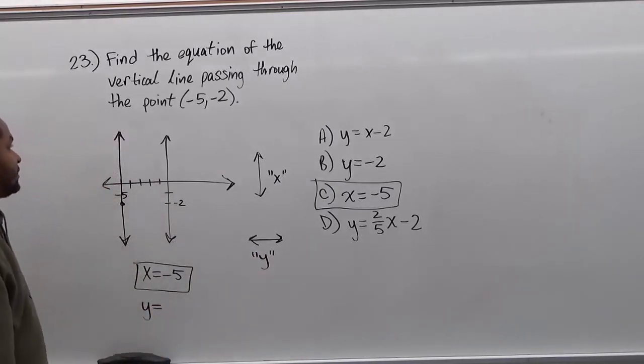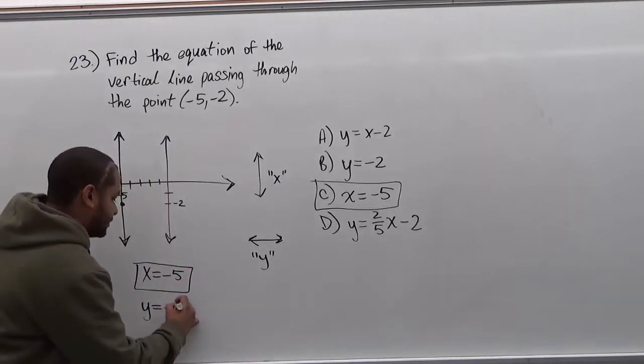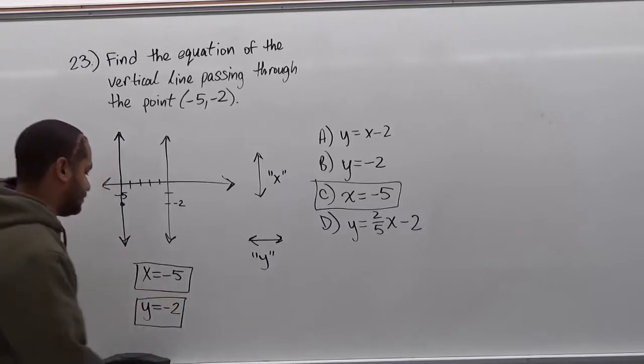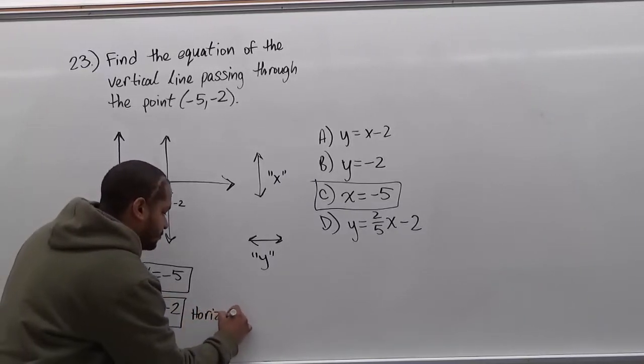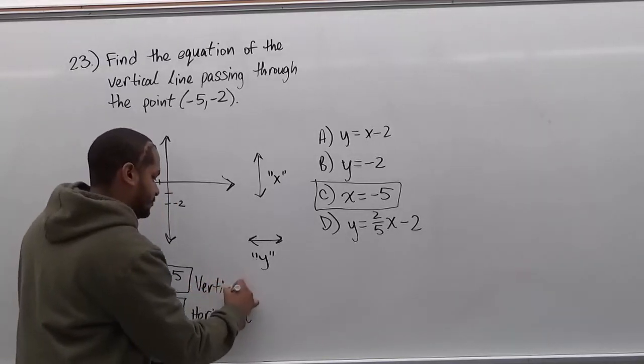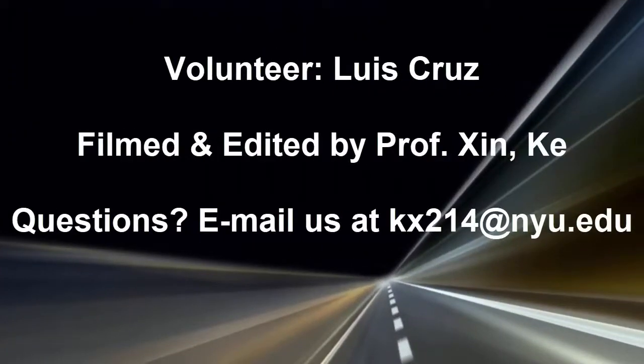We would say y is equivalent to the y coordinate of the point that it's passing through. Then we have the horizontal line, and this is the vertical line.